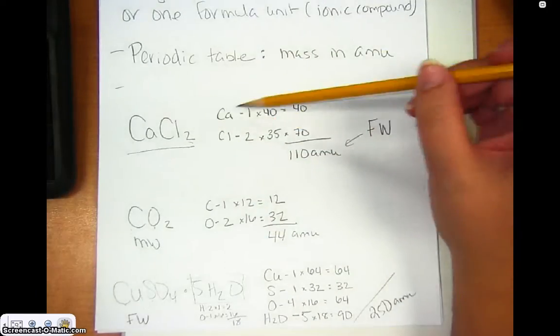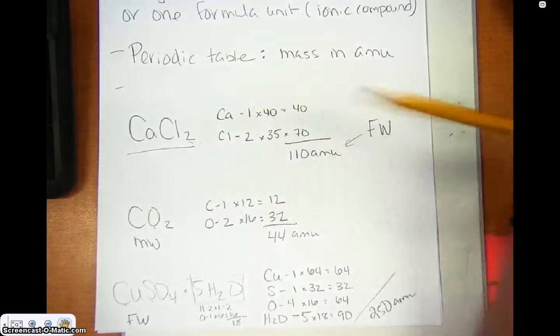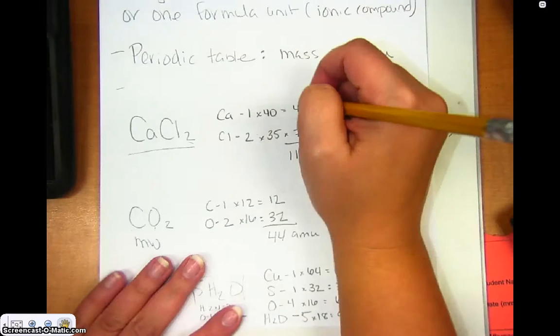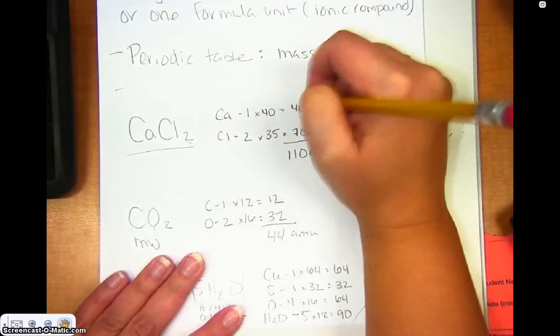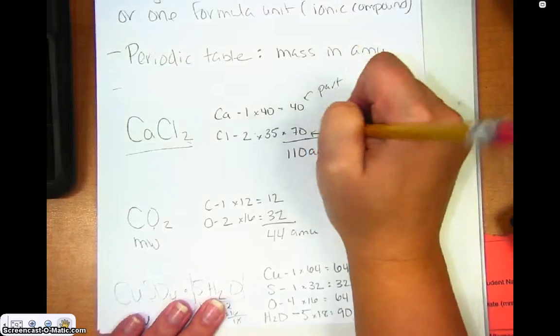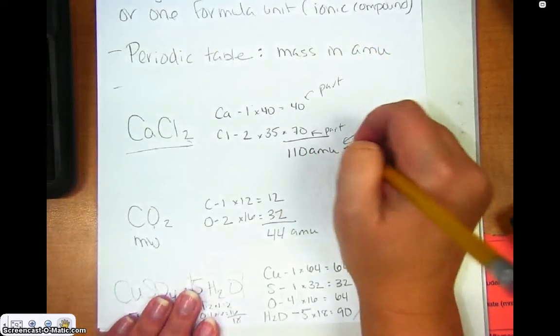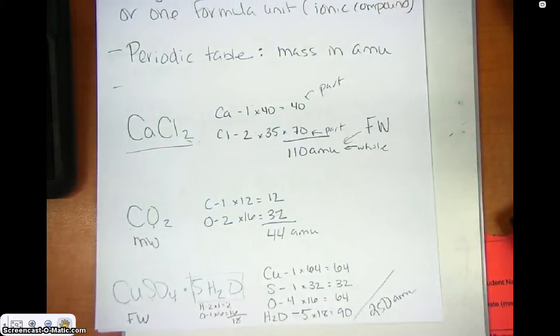So, here you've got calcium chloride. There's one calcium, two chlorines. You multiply by the mass on the periodic table, and therefore, you're going to get the parts of each. So, that is the part that is calcium. This is the part that is chlorine, and they add up to the whole that is 110 atomic mass units.